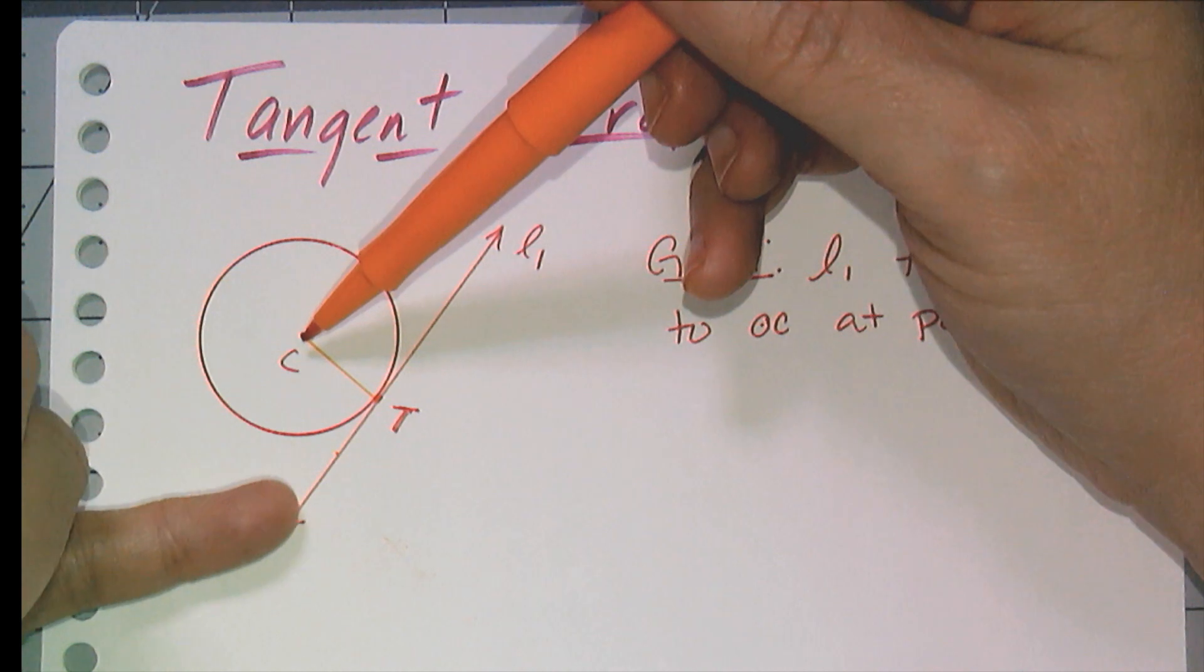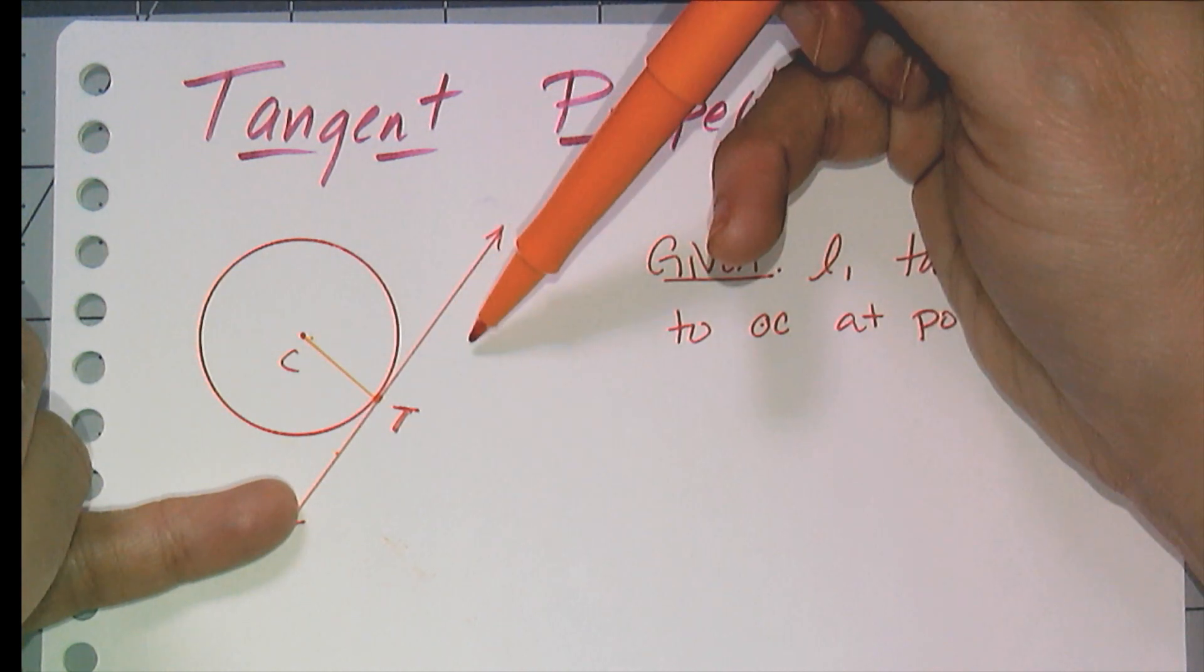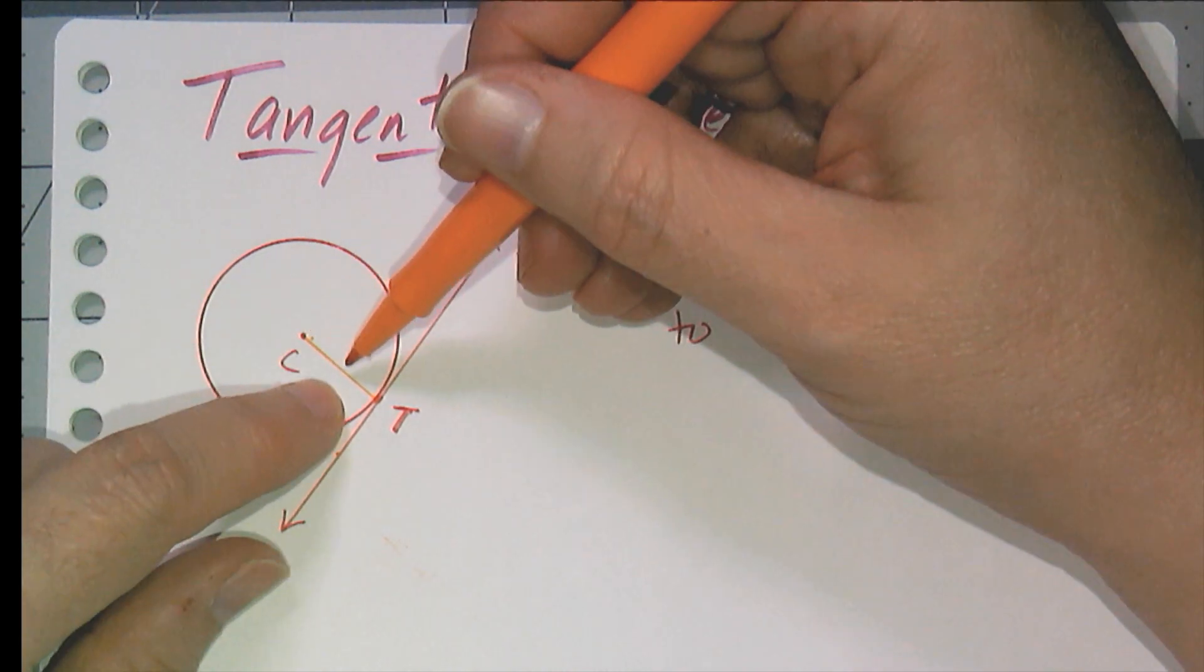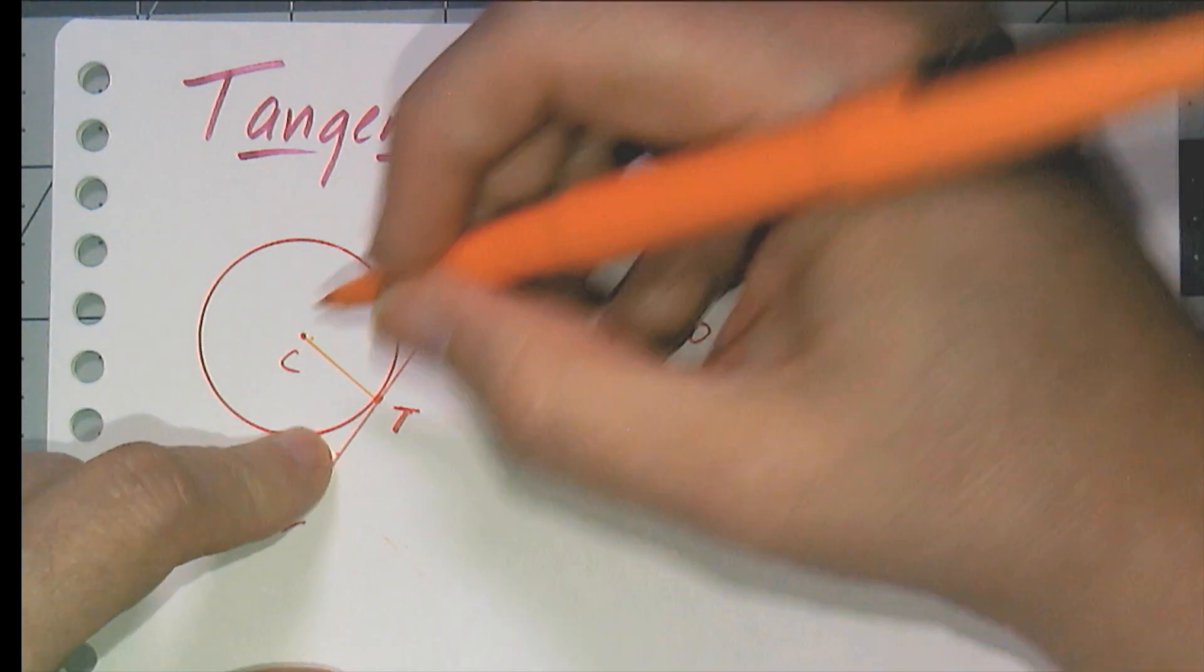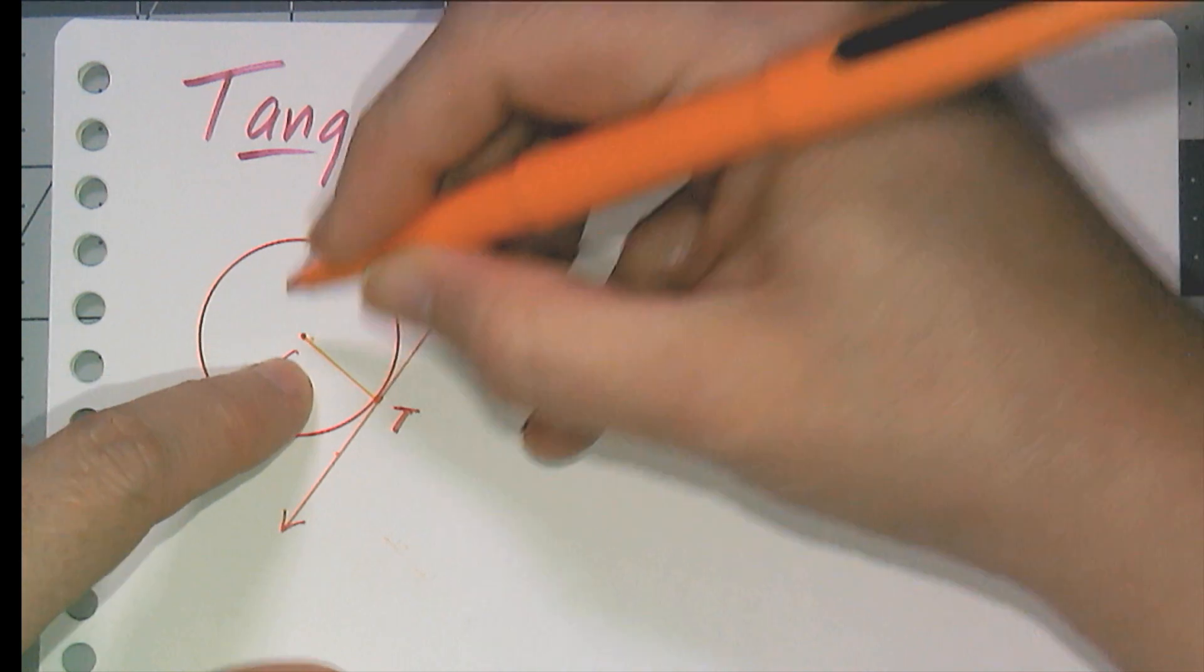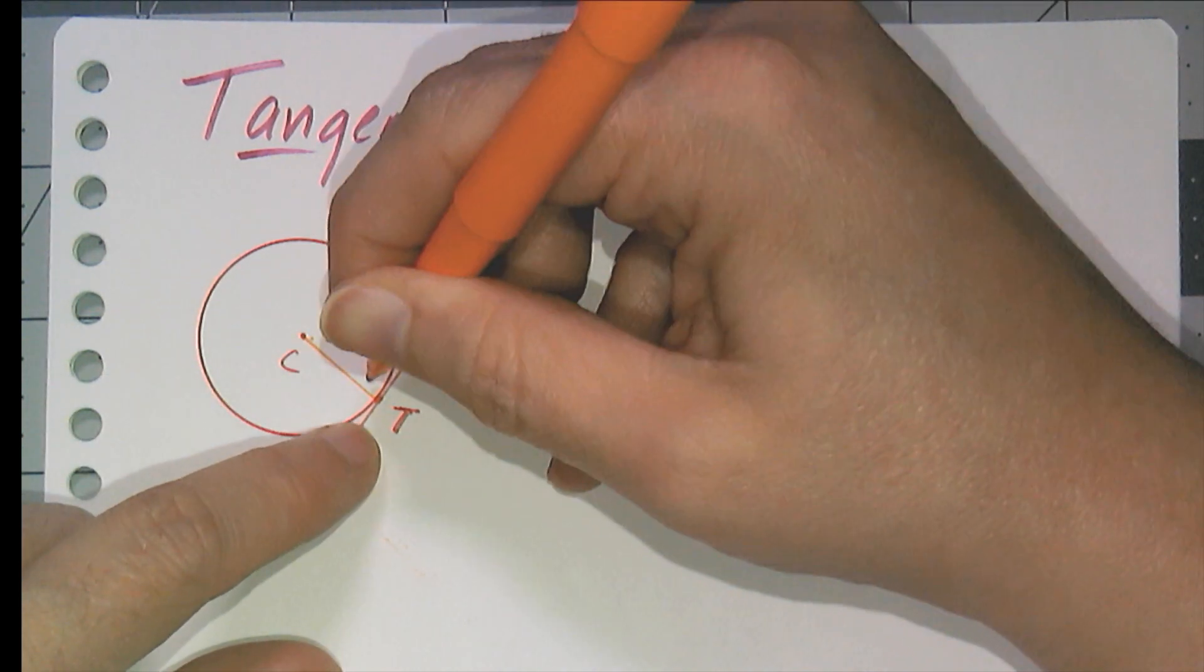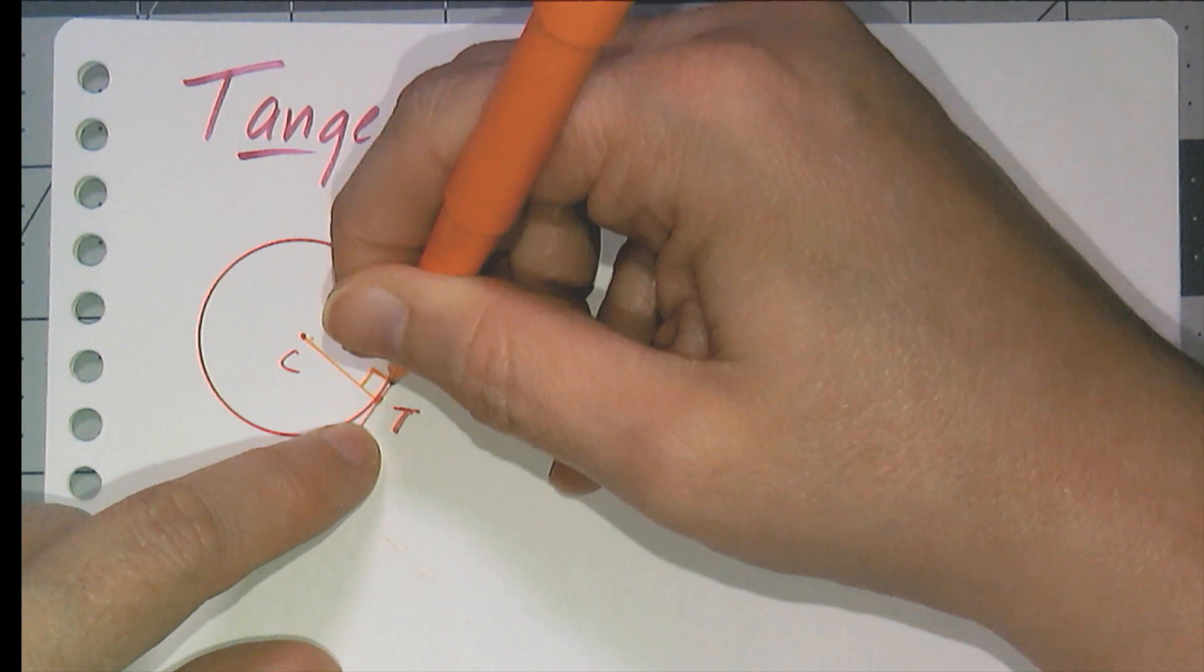Because any other line segment I were to draw would be longer than the radius of the circle. And so because this logically has to be the shortest distance, it means that if I draw a radius to the point of tangency, that radius has to be perpendicular to the tangent.